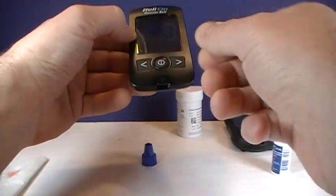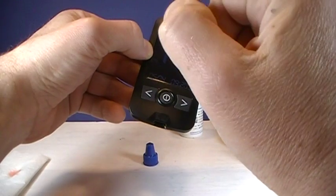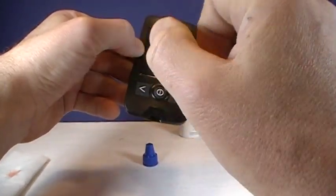All right so we held down the button on the right hand side for three seconds to get that control solution and that way it won't interfere with the averages of our other readings.